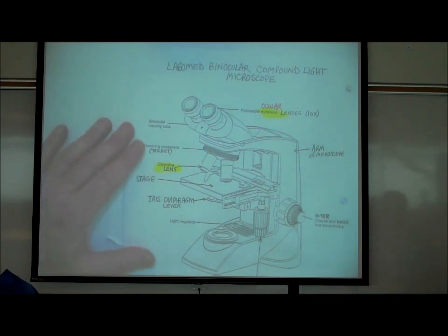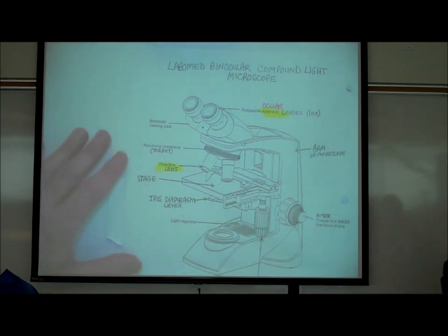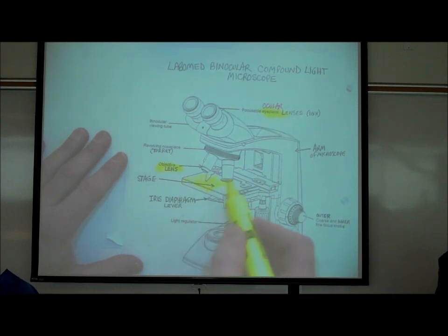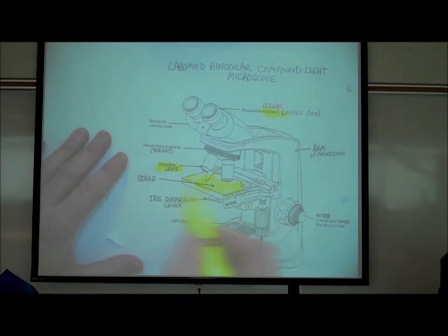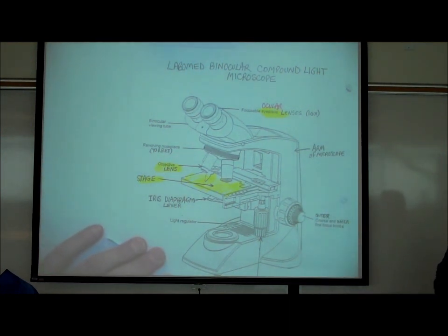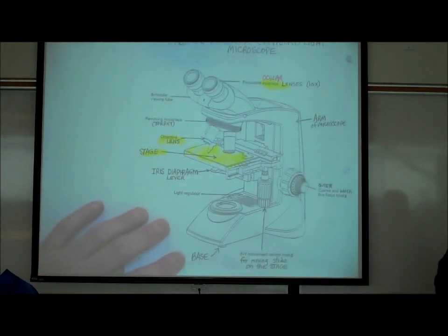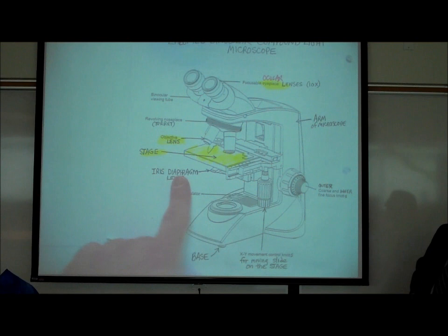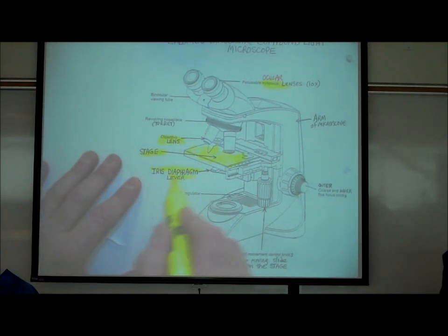You have four objective lenses. This flat area is called the stage of the microscope, and that's where you attach a slide. Right below the stage there's something called an iris diaphragm lever, which I'm going to be explaining.